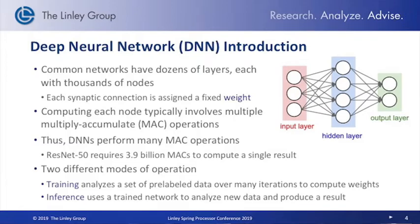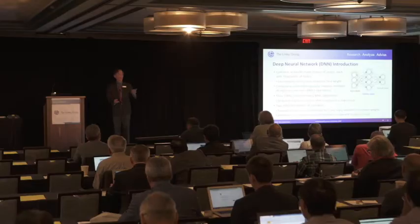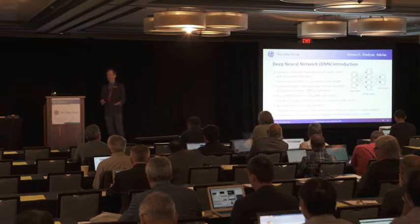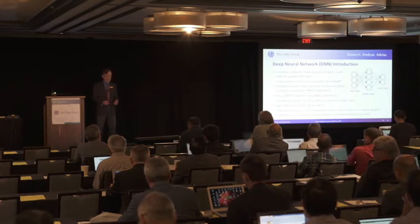We'll be talking about two different modes of neural network operation. First, a neural network has to be trained to recognize a particular type of data — for example, if you're looking for pictures of cats, you train it with pictures of cats. Once you've trained the neural network and computed the weighting value of each connection, you can use that network to do inference, meaning you analyze data and compute results — is this a cat or not? That's the basic process: training and then inference.